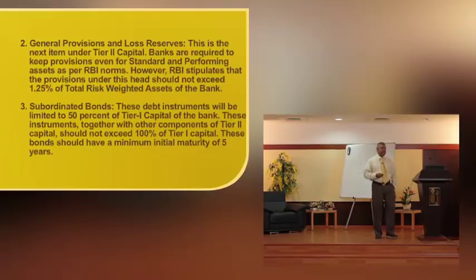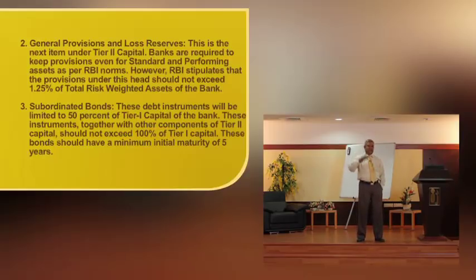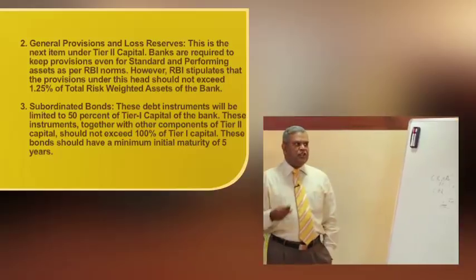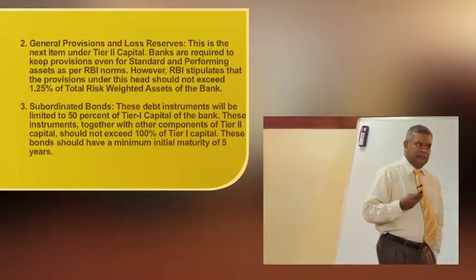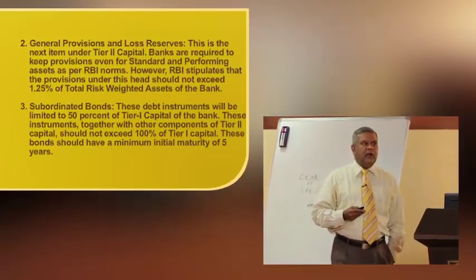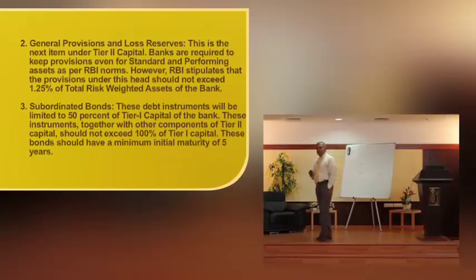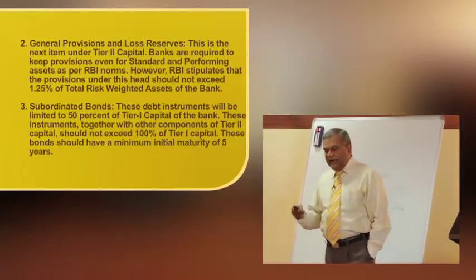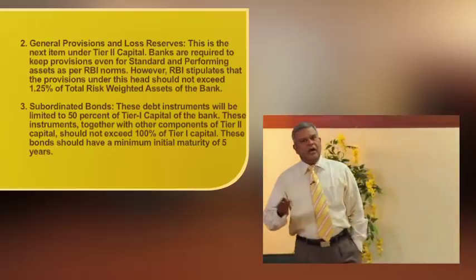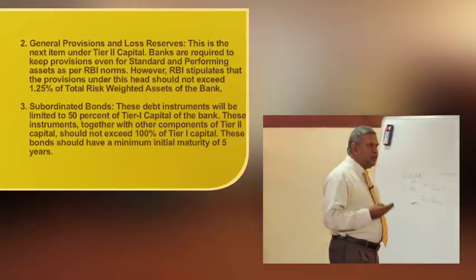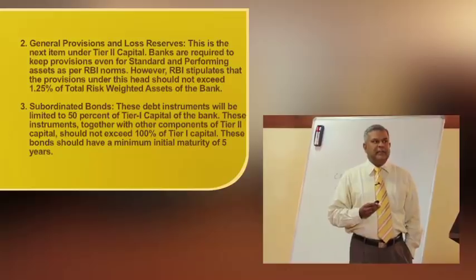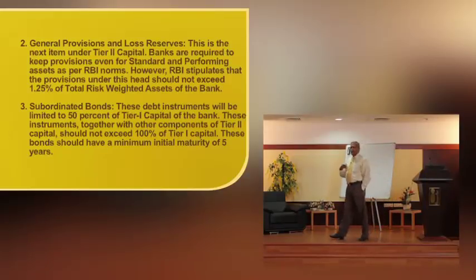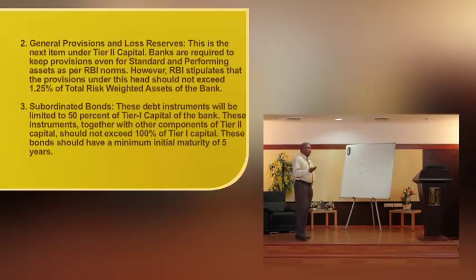The next item under Tier-2 capital is general provisions and loss reserves. Banks are required to keep provisions even for standard and performing assets. RBI has put a ceiling on this — the general provision should not exceed 1.25% of total risk-weighted assets. The next item is subordinated bonds — medium-term bonds where, as per RBI norms, the initial maturity period should be 5 years. These debt instruments are limited to 50% of Tier-1 capital. So if Tier-1 capital is 1,000 crore, banks are not permitted to issue more than 500 crores through this route.